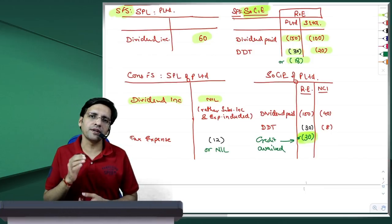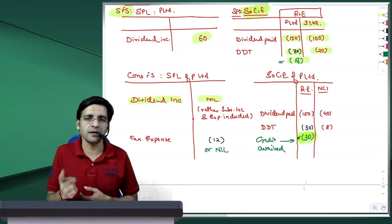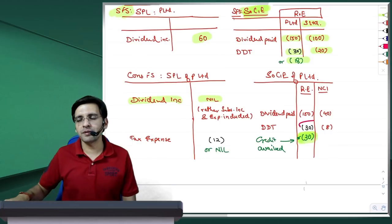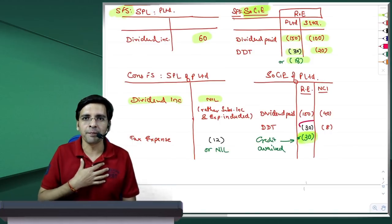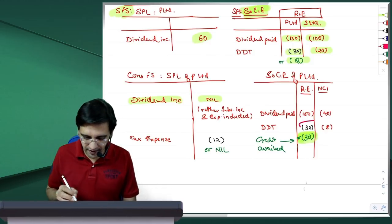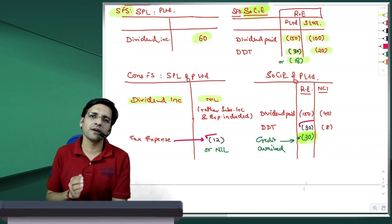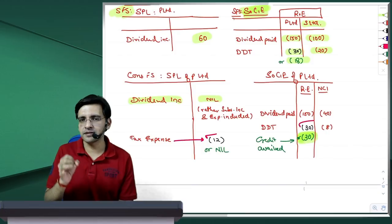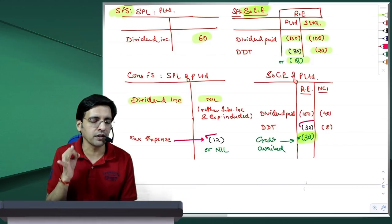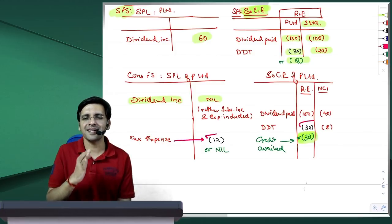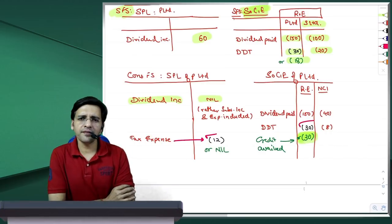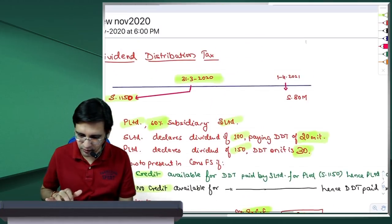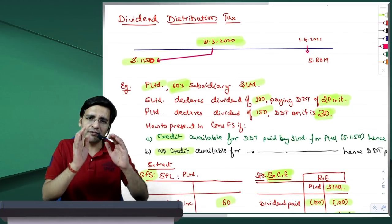Credit parent ko milay ya na milay, har case me NCI ka treatment clear ho gya. Second, parent ka kya treatment hooga? Agar parent ko credit mila hai, to subsidiary meri hi kamni hai, usne 100 rupay kamai, out of which 60 rupay belong to me aur usse related 12 ka tax. Subsidiary ka tax mera tax, NCI ka portion hata du to. Ye 12 rupay ka jo tax usne pay kiya hai, iske karan mujhe 18 hi pay karna pada. Toh main us 12 plus 18 ko statement of changes in equity mein 30 rupay ka dividend distribution tax paid for the group dikhaunga.